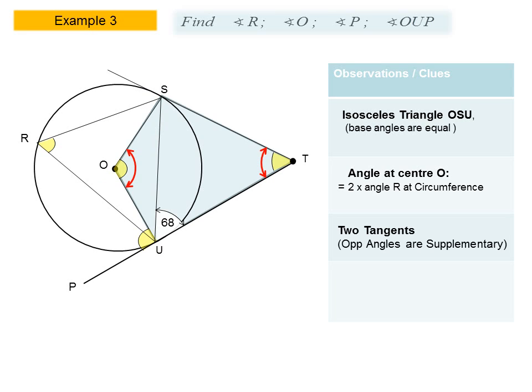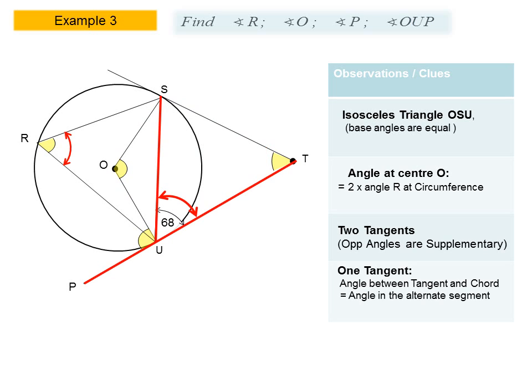Our third clue is that we have two tangents. From our discussions in lesson one, we know that opposite angles are supplementary in the quadrilateral formed between the two tangents and the center. Our final clue involves using one of the tangents with the theorem that the angle between the tangent and the chord equals the angle in the alternate segment. Please review lesson one if you're having difficulty following.